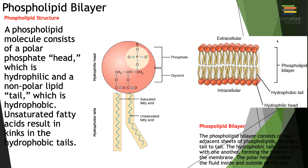As briefly discussed in the last module, the phospholipid is a molecule that contains a polar phosphate head — which is hydrophilic — and a nonpolar lipid tail, which is a hydrophobic unsaturated fatty acid. Remember back to the first module where we talked about unsaturated fatty acids containing the double bond.